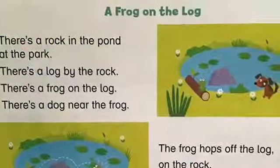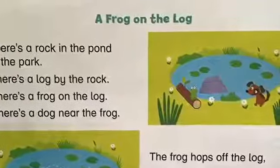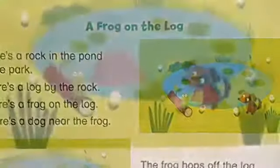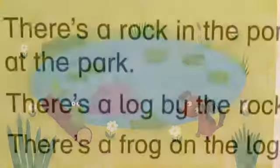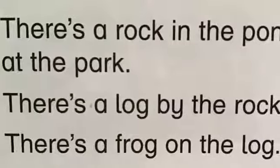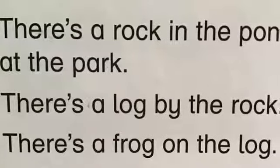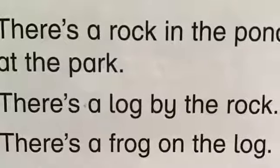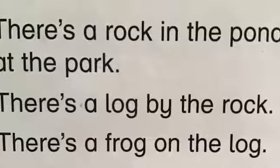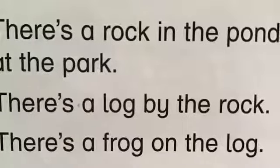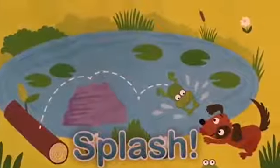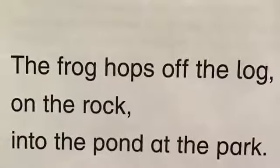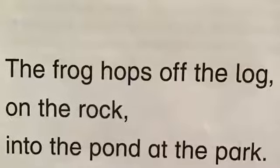And we read the story on page 78. Listen: A frog on the log. See the picture to understand the next sentence. There is a rock in the pond at the park. There is a log by the rock. There is a frog on the log. There is a dog near the frog. See another picture to understand the next sentence. The frog hops off the log, on the rock, into the pond at the park.